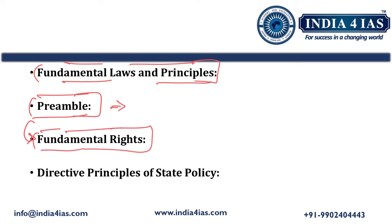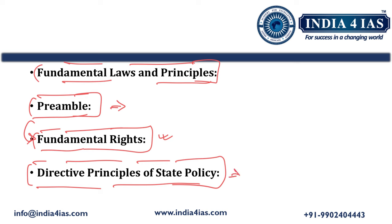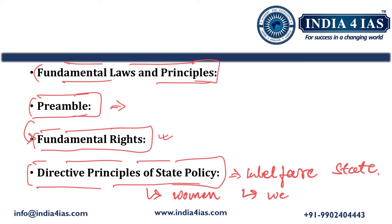After writing about the preamble, we should transition to fundamental rights — what they are, why they are important, the role of fundamental rights in protecting citizens and weaker sections of society, and the role of the judiciary in protecting fundamental rights. Then we should transition to the Directive Principles of State Policy, their importance in achieving a welfare state, and their role in empowering women and weaker sections of society.